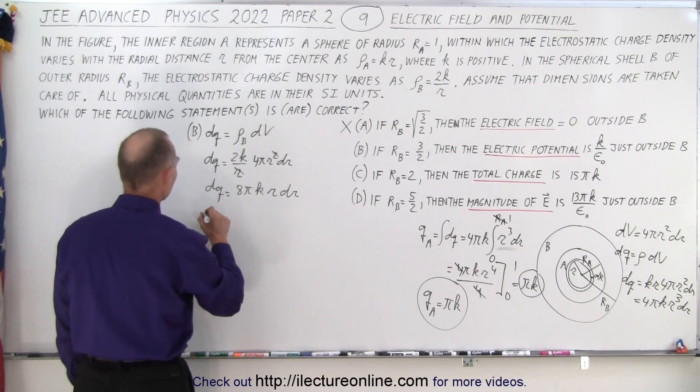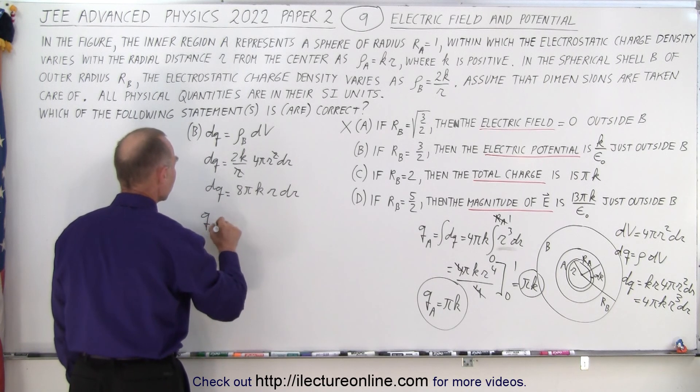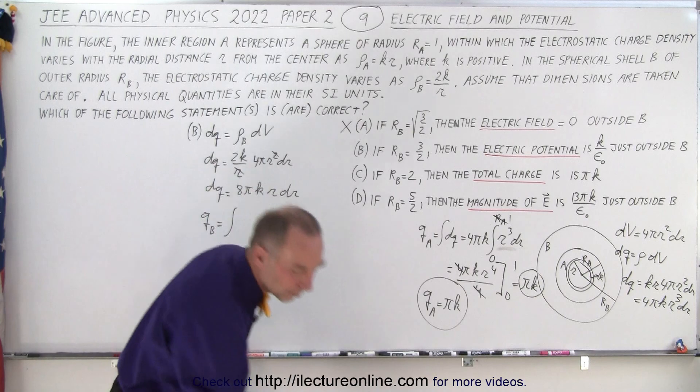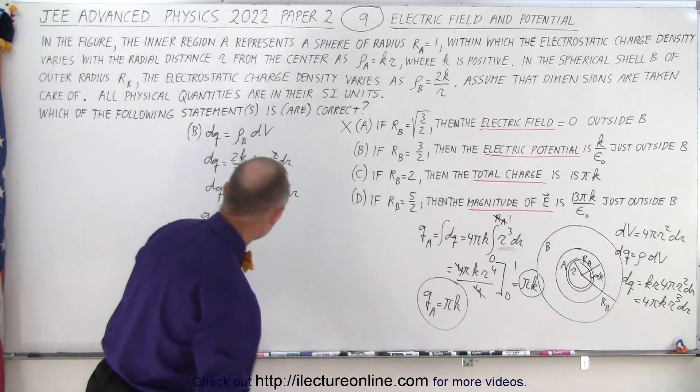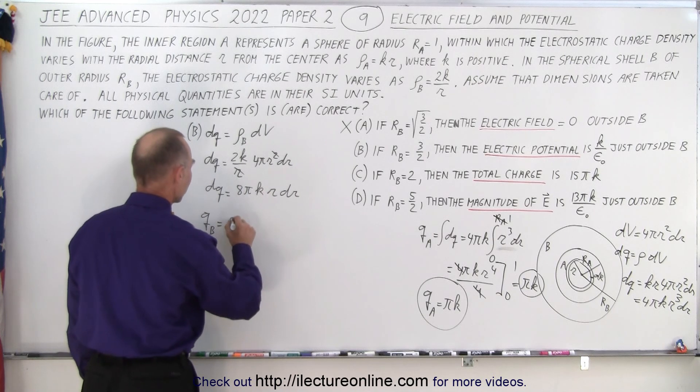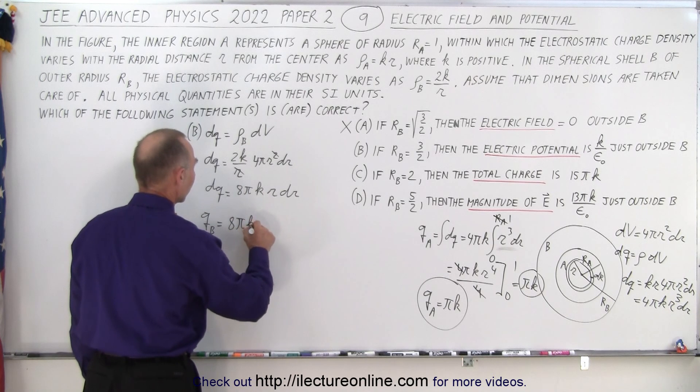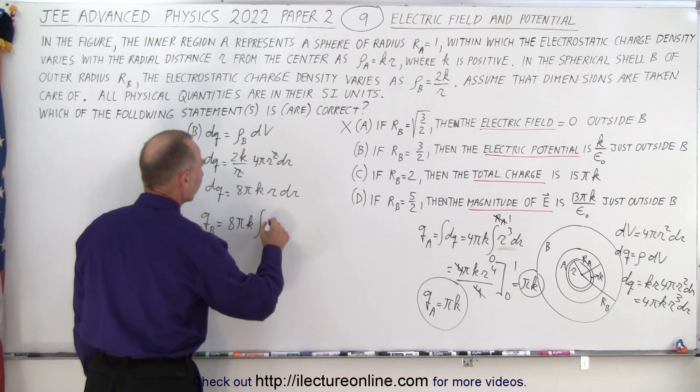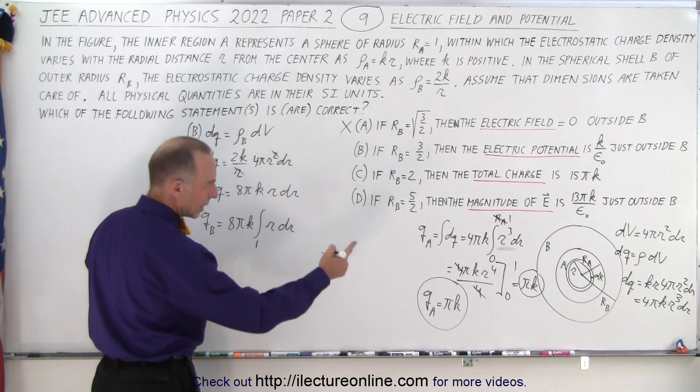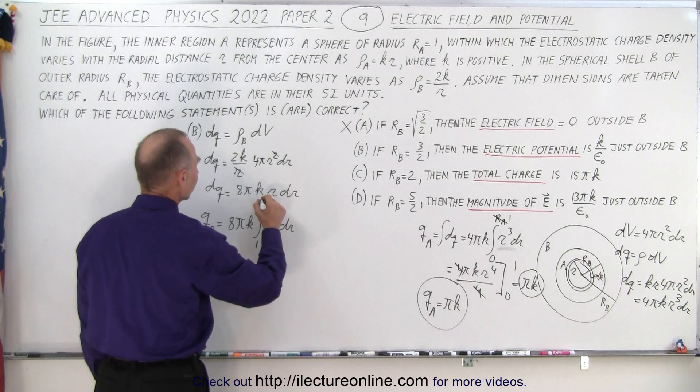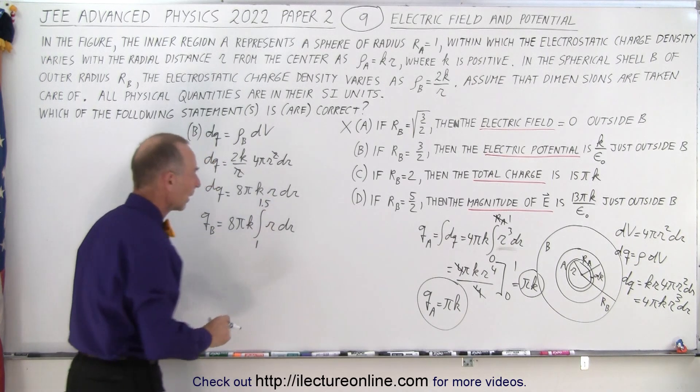So now we're ready to integrate that, because now we can say that q in part B is equal to the integral. So we want to pull out 8 pi k, those are constants, times the integral of r dr going from r equals 1, which is the radius A, to 3 halves, 1.5, or 3 halves.